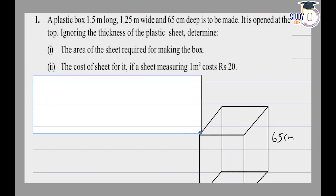So, we need to create a box. For this, we need to find the sheet area. Let's see what is given. Given: length L = 1.5 meter.